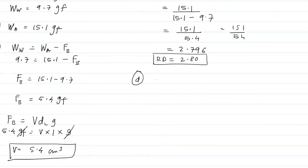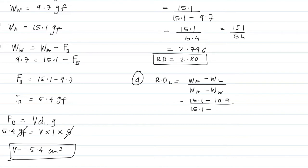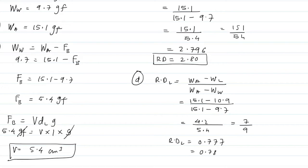They are also asking for relative density of the liquid. Relative density of liquid equals weight in air minus weight in liquid, divided by weight in air minus weight in water. That is 15.1 minus 10.9 upon 15.1 minus 9.7, giving 4.2 upon 5.4, which equals approximately 0.78.